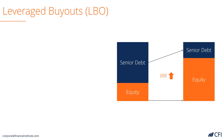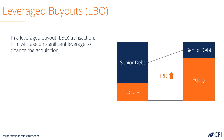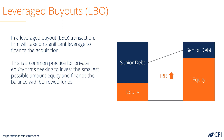Leveraged buyouts are a situation where a company completes an acquisition and uses a very high amount of debt to fund it. It puts in as small an amount of equity as possible, and over time pays down the debt and increases its equity proportion. This results in the highest possible internal rate of return for equity investors.